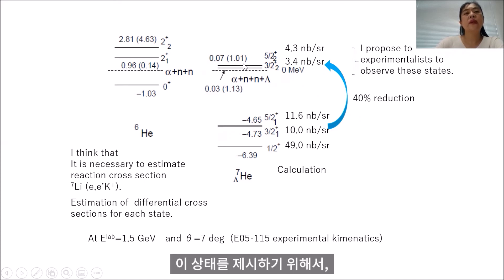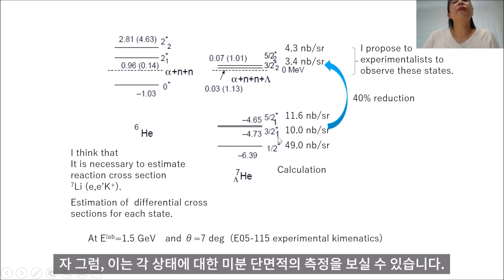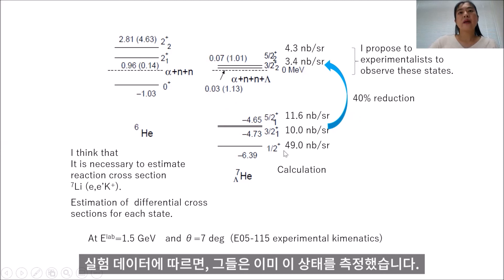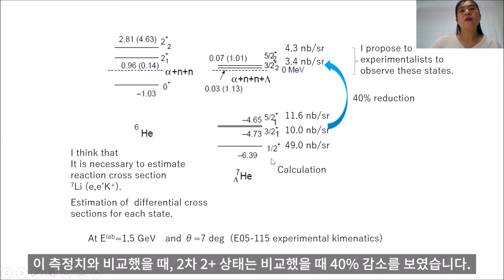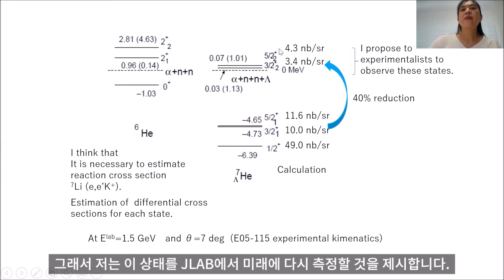In order to propose this state, it is necessary to estimate the reaction cross-section via electron scattering. This is the estimation of the differential cross-section of the ground state — you can see that according to the experimental data they have already observed this state. Comparing with this estimation, the second 3/2+ state shows a 40% reduction in comparison. However, I think it is possible to measure this state in the future, and I propose to experimentalists to observe this state in the future at Jefferson Laboratory.